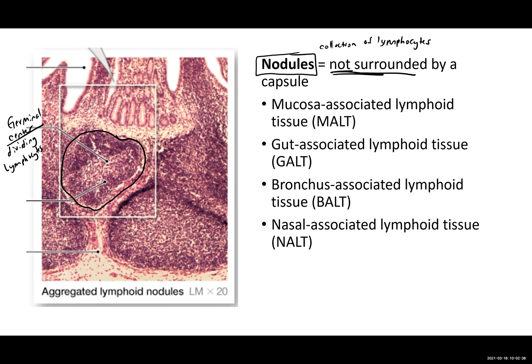The lymph nodules are actually one of the stars of the lymphatic system. We already mentioned the MALT — mucosa-associated lymphoid tissue — in a previous video, which talks about the mucosal lining. Anywhere that mucosal lining is present, you're going to see lymphoid nodules. Think in terms of the three passageways of the body where foreign material has potential access — the entire lining of the digestive tract needs these lymphoid tissues because you're bringing in food, water, and pathogens along with that.